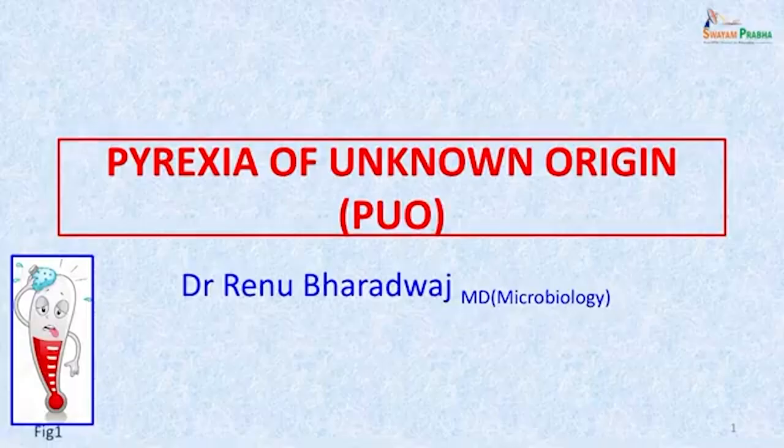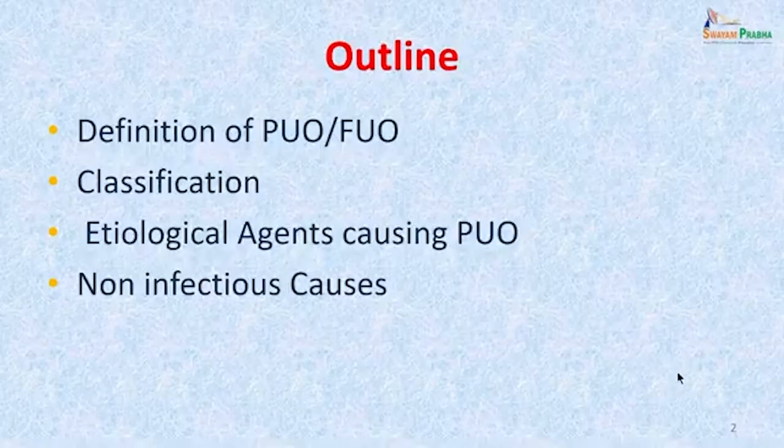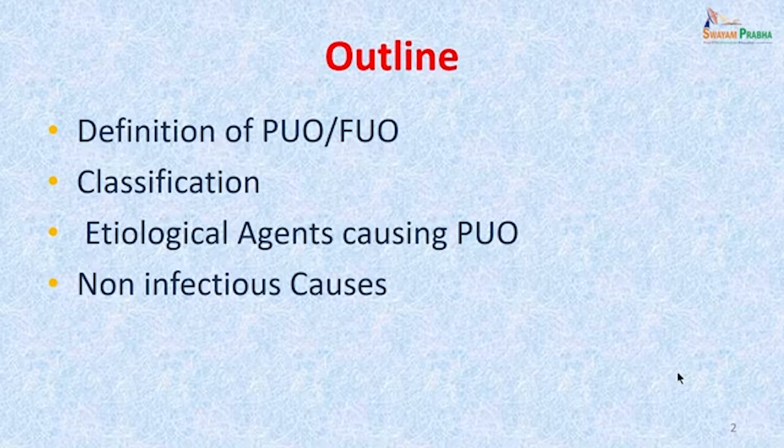Hello and welcome to today's session. With this session we start a series of sessions on Pyrexia of Unknown Origin, or PUO or FUO as it is often commonly called. We will be discussing what this condition is and the various common causative agents of pyrexia of unknown origin over the next few lectures. The outline of today's lecture will cover the definition of PUO, its classification, the etiological agents which can cause PUO, and the non-infectious causes of PUO.